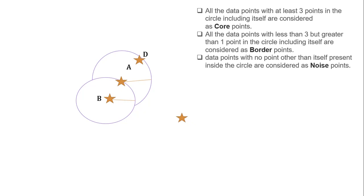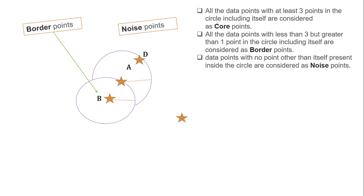Since point B is not a core point, it is either a border point or a noise point. Checking the border point condition: point B is a neighbor of core point A, as point B falls inside the circle of core point A. So point B is a border point. For point C, we draw a circle with epsilon radius — it has no data points inside the circle except itself, so it doesn't satisfy any condition and is considered a noise point or outlier.